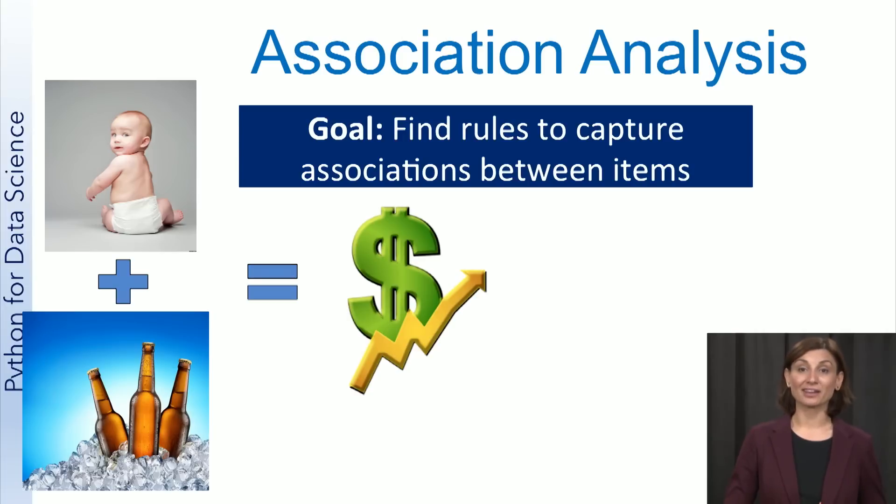According to data mining folklore, a supermarket chain used association analysis to discover a connection between two seemingly unrelated products. They discovered that many customers who go to the supermarket late on Sunday night to buy diapers also tend to buy beer. This information was then used to place beer and diapers close together on Sundays, and they saw a jump in sales of both items. This is the famous diaper-beer connection.